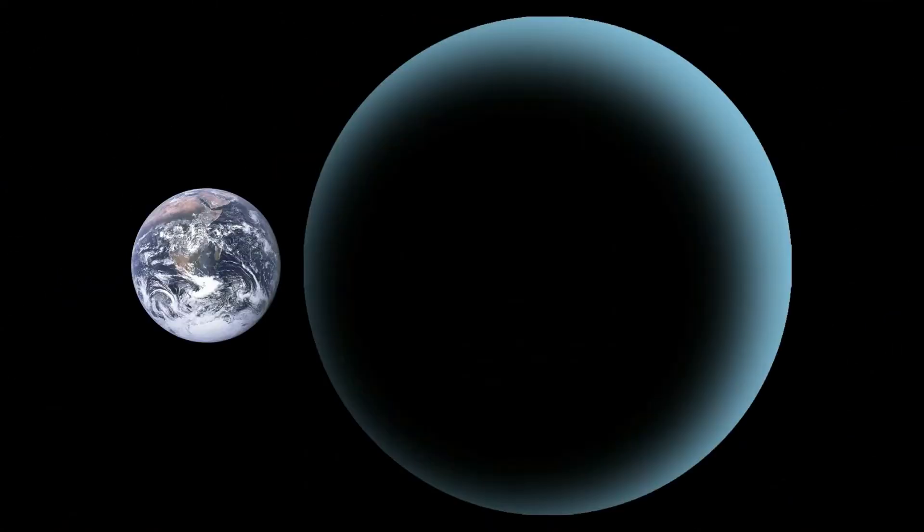Interestingly, the Forbidden Planet is 20 times the size of our planet, which is around 20% smaller than Neptune's radius.